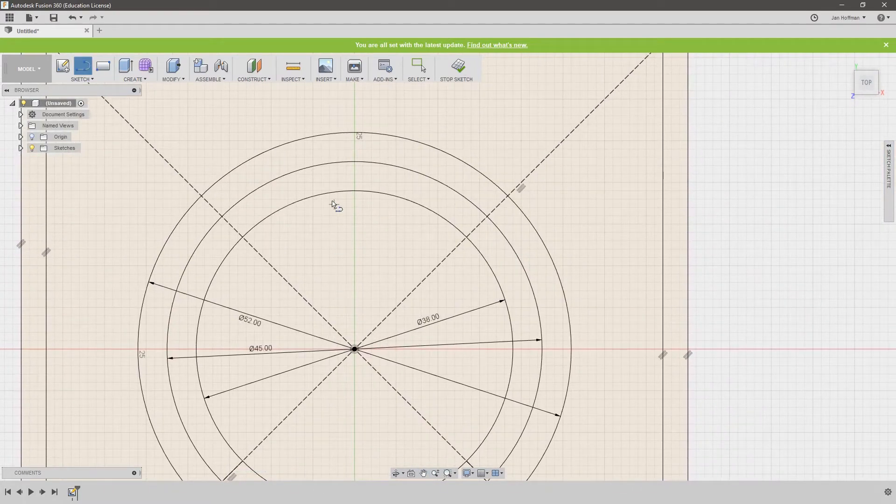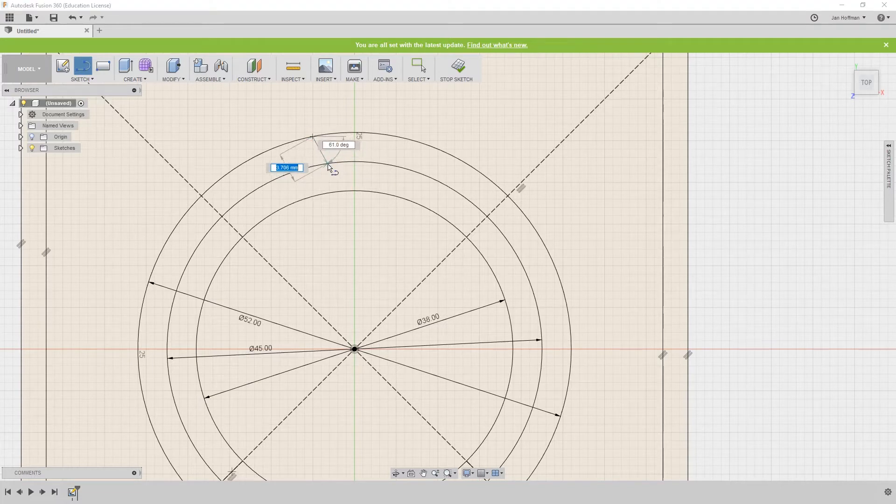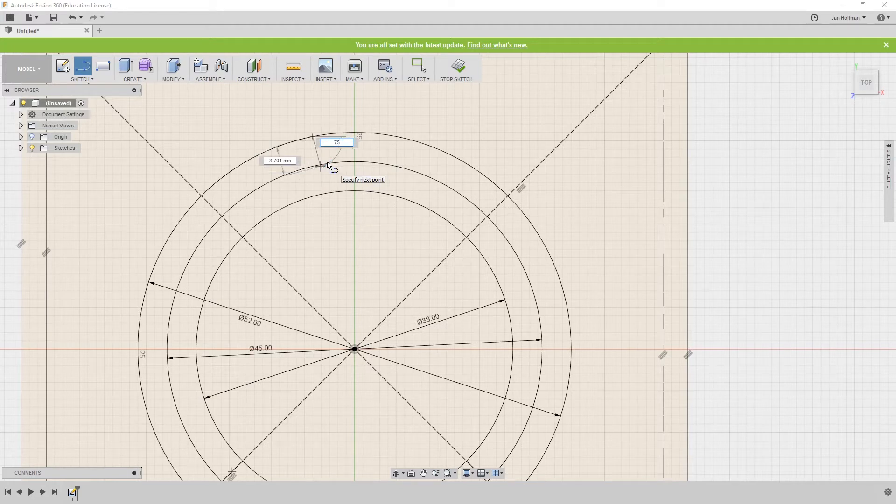Going up, we need the part that holds the holder. This part wasn't detailed in my original sketch at all, so just going with my gut here. And this can be, let's say, 75 degrees.